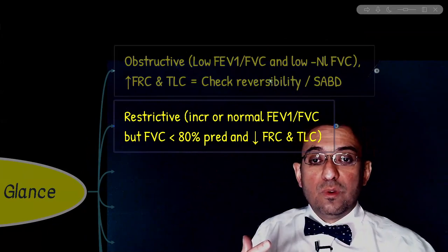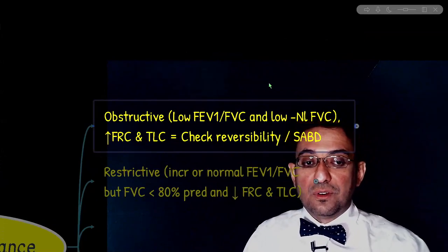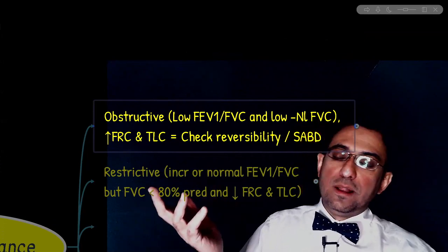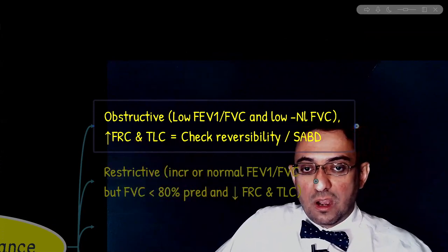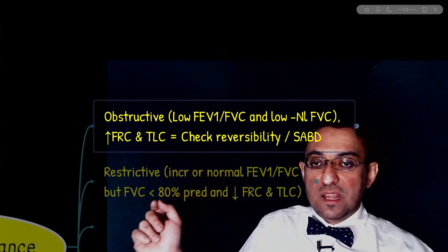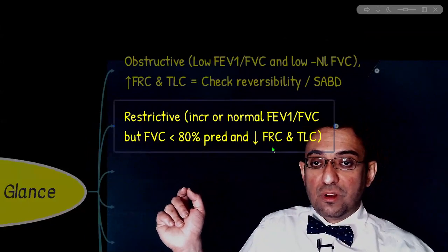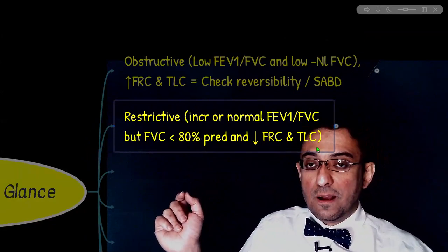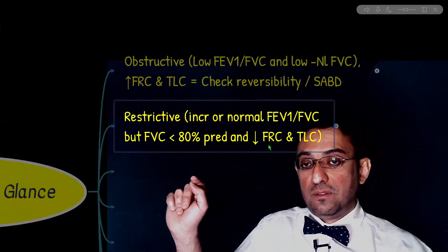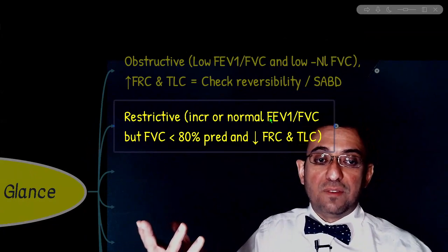What about a scenario in which neither the ratio nor the individual values are provided, and you are asked to analyze whether it is a restrictive or obstructive pattern? Two important facts: all restrictive lung diseases, especially the interstitial types, are associated with decreased lung volumes. All lung volumes and capacities are decreased in the majority of restrictive lung diseases — specifically, functional residual capacity and total lung capacity are decreased.